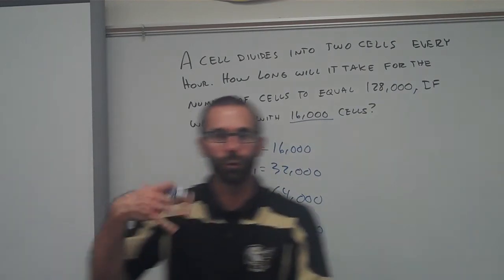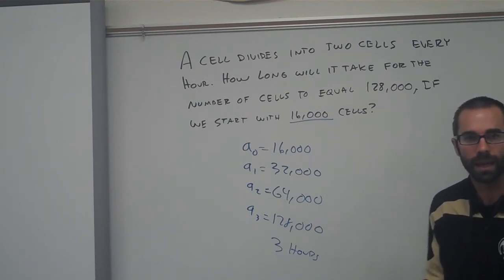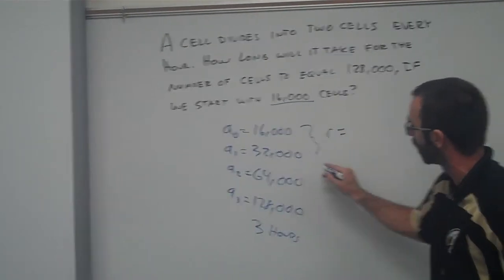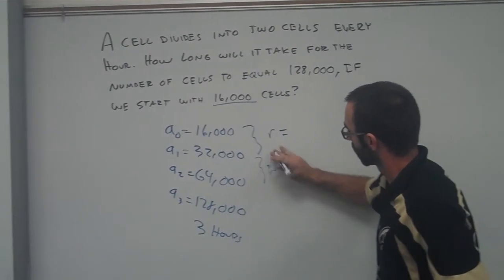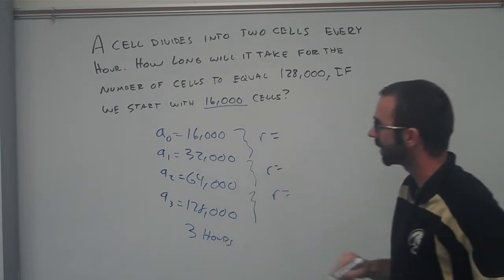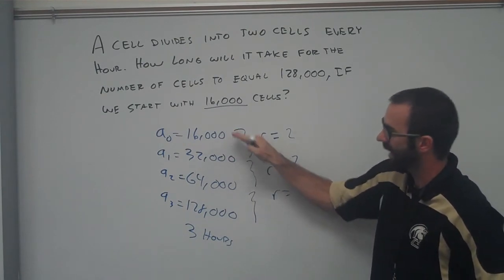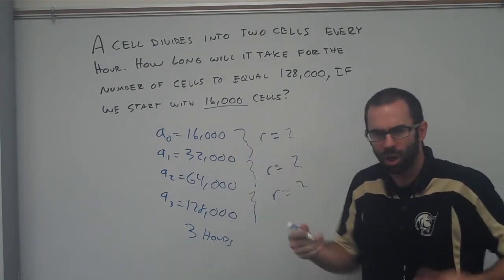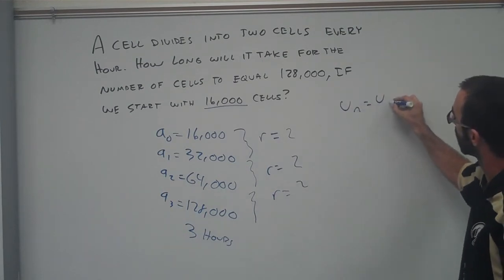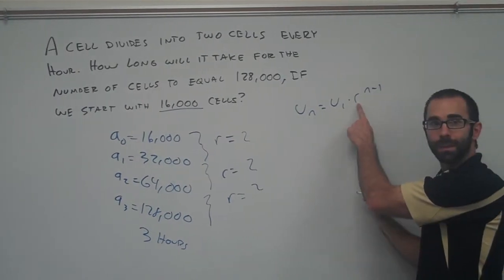And do you notice that this right here is a sequence and it's actually a geometric sequence because if I try to find my R, if I'm going to find my R between any of these, it's going to be the same. It's going to be 2, 2, 2. 32,000 divided by 16,000, 64,000 divided by 32,000, it's all going to be 2. So we know that if we're going to use our formula here, U sub N equals U sub 1 times R to the N minus 1, we know that our R is going to be 2.